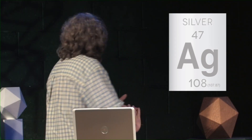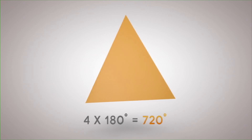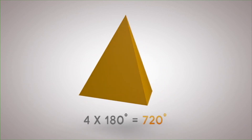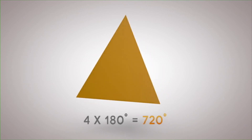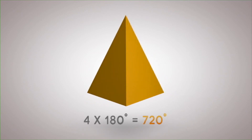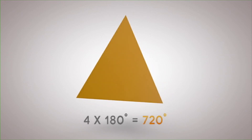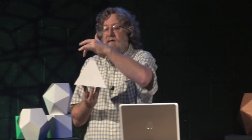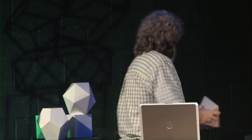Let's get into some of the solids. The tetrahedron is composed of four equilateral triangular faces. Four times 180 is 720 degrees — that is the total angular measure of this particular geometric form. This is known as one of the Platonic solids, or regular polyhedra. Polyhedra means multiple faces. The regular polyhedra is a family of five, and each has the same polygonal face — in this case, the equilateral triangle.